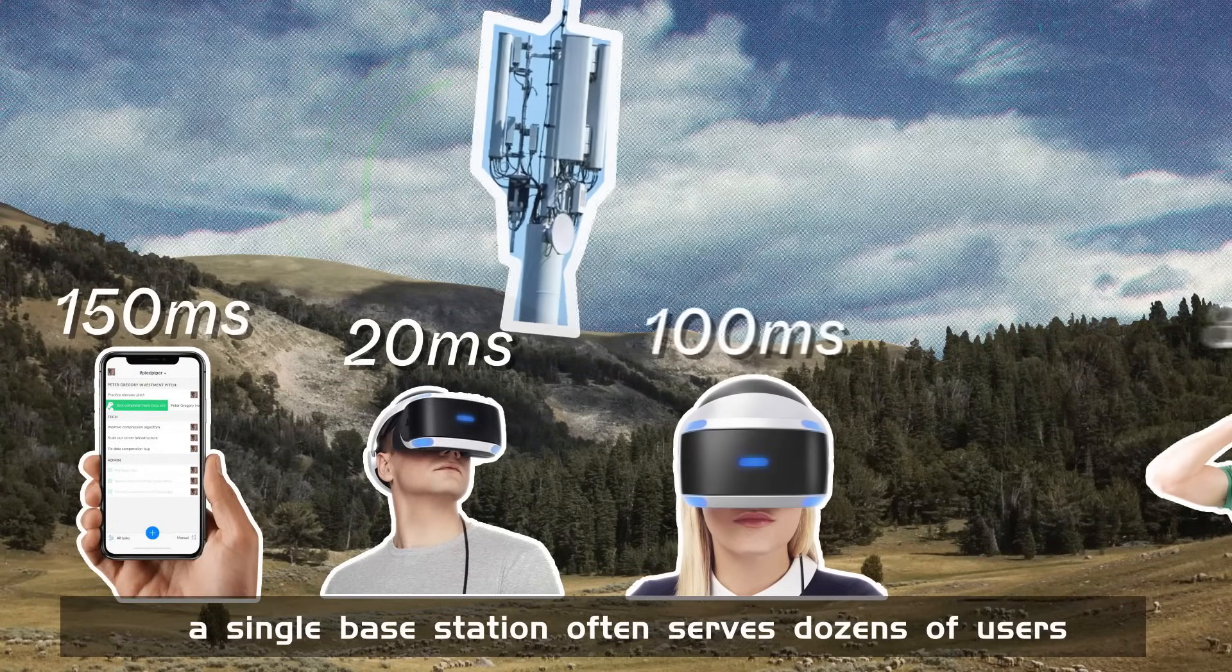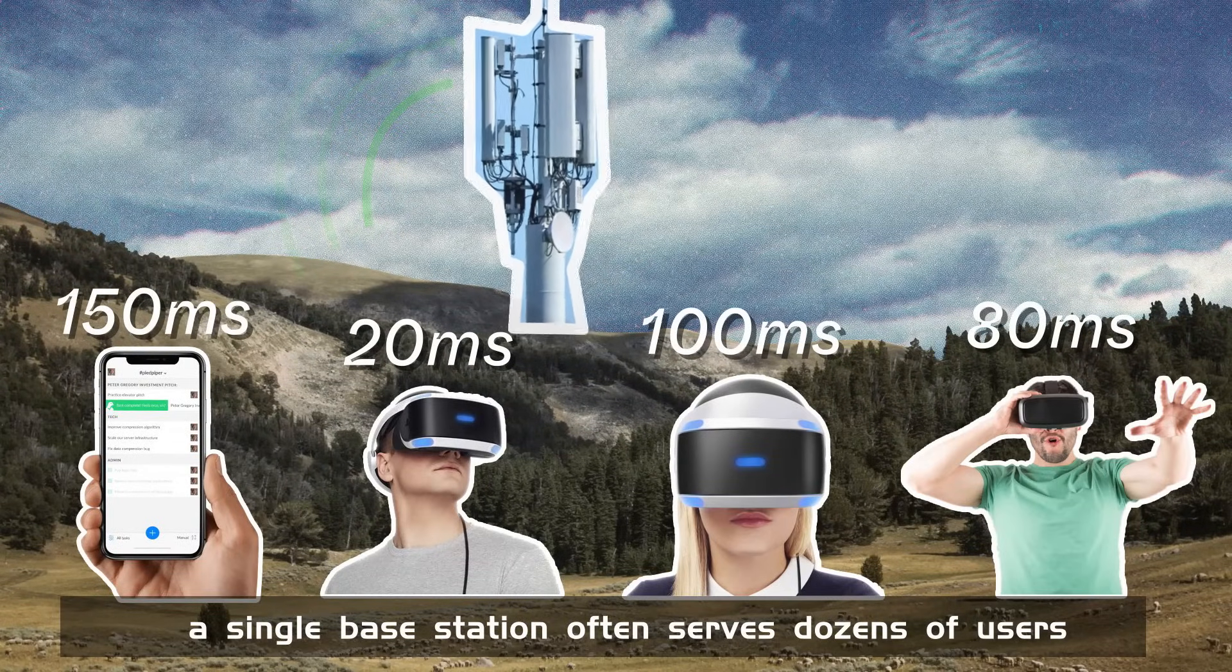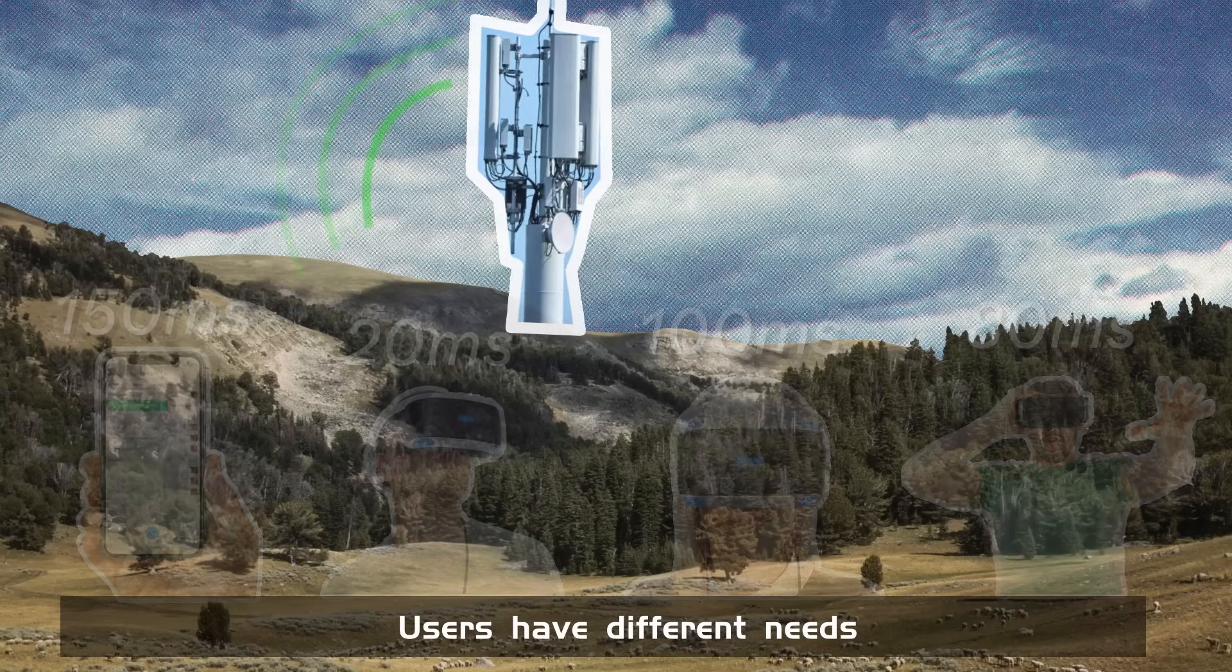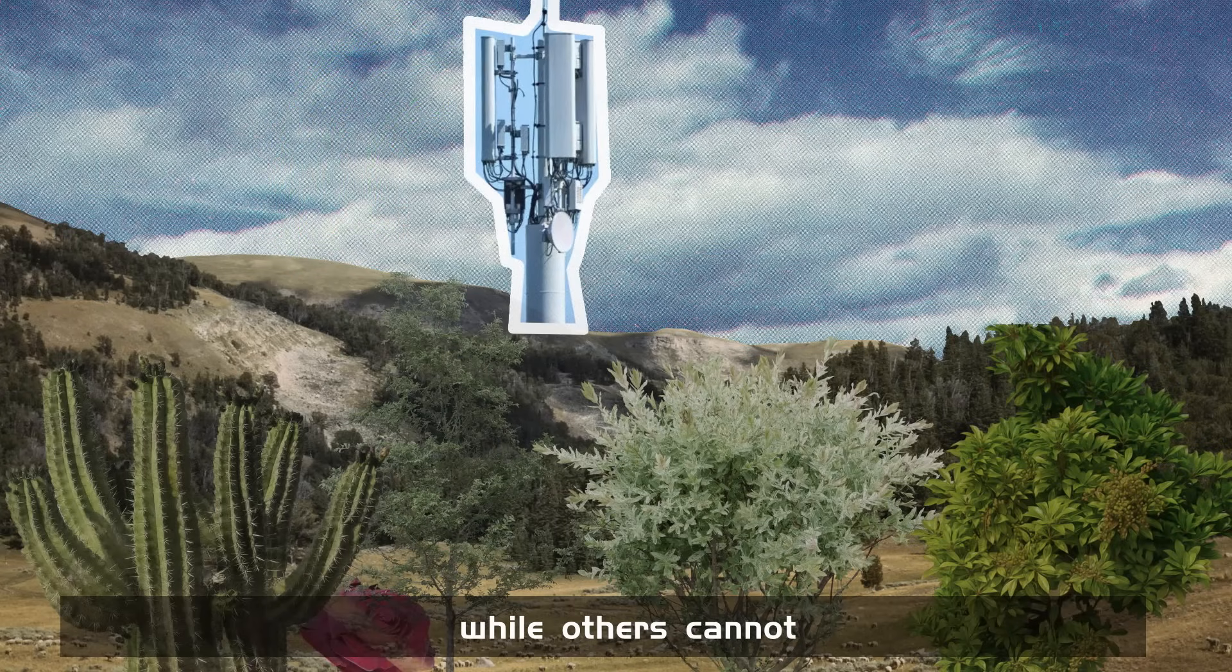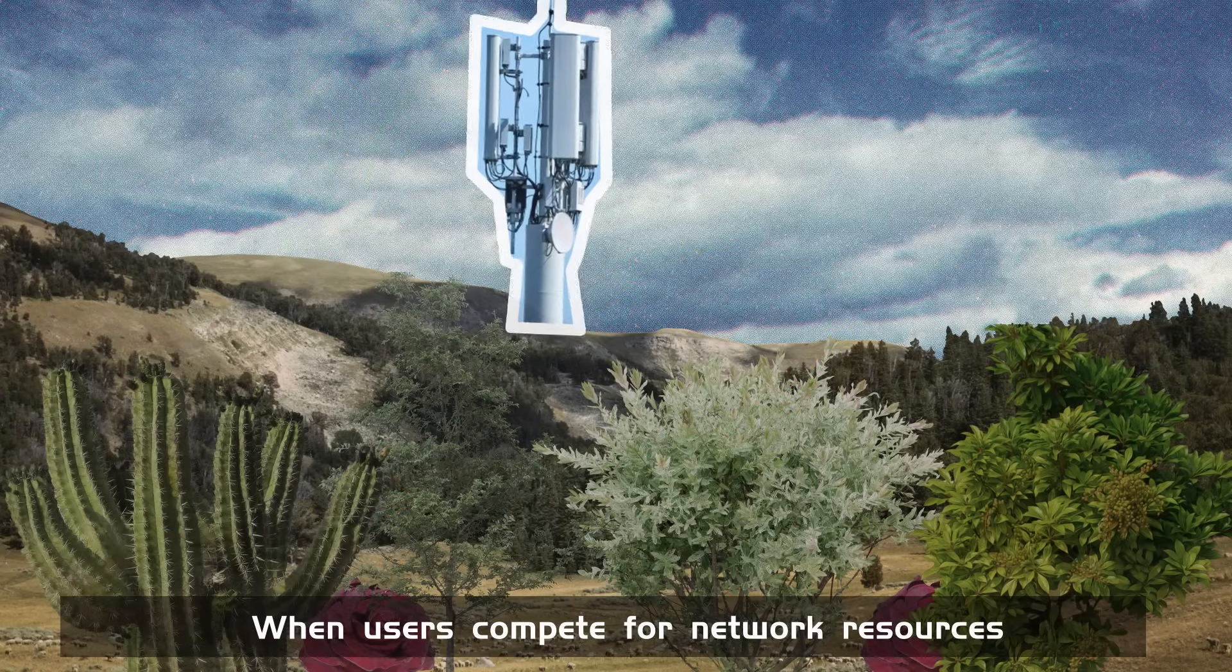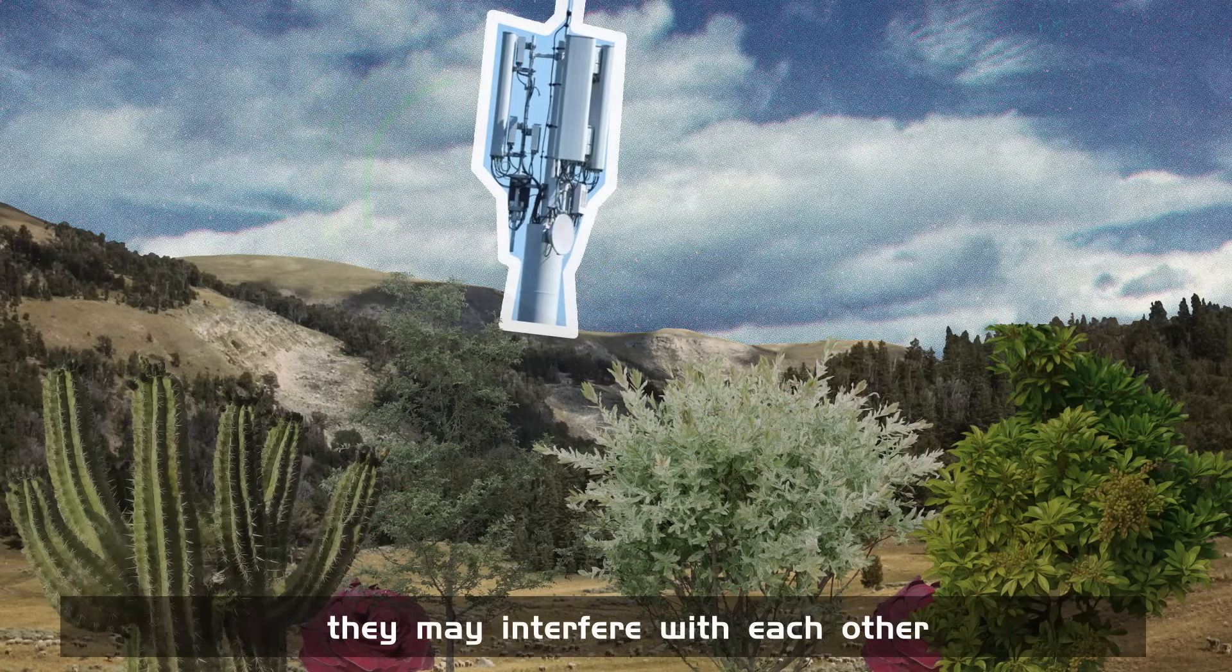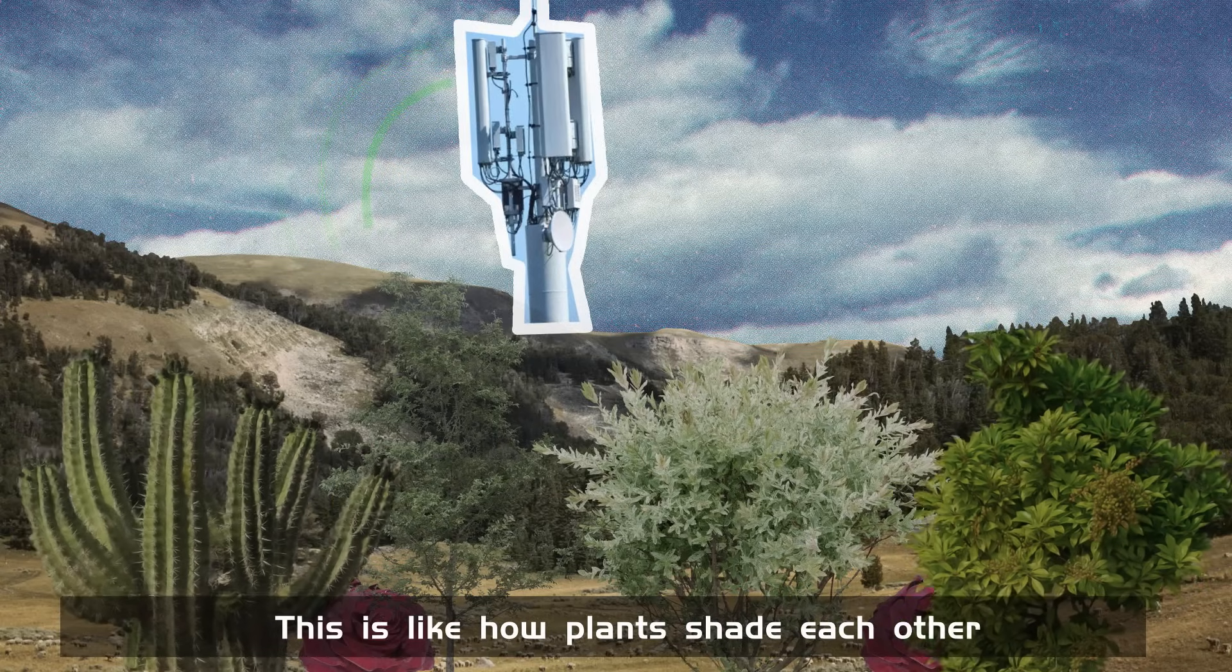In a network, a single base station often serves dozens of users. Users have different needs. It's like how some plants can handle dry conditions while others cannot. When users compete for network resources, they may interfere with each other. This is like how plants shade each other.